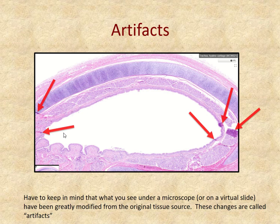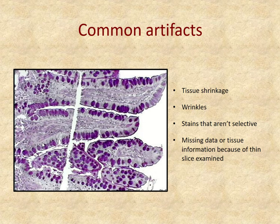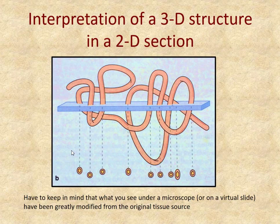I also want to talk about artifacts. When you're looking at a slide, you're going to see a lot of stuff that looks very noticeable — as if it were a pathology or very important structure. But unfortunately, it's usually just a tear, bubble, or space that occurred because of the process of making the slide — not what the tissue looked like before. Common artifacts include tissue shrinking, where you see a lot of white space that looks like there was no tissue there, when the tissue simply shrank during processing.